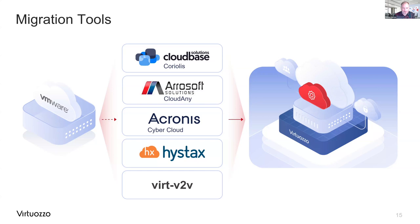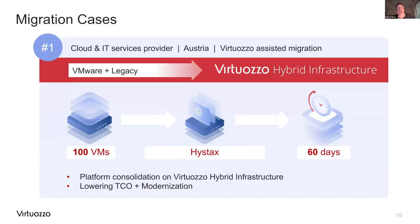Here are four customer cases. The first is a cloud and IT services provider from Austria that was looking for platform consolidation and found Virtuoso Hybrid Infrastructure as the go-to solution for VMware workloads and some legacy workloads. We did the regular Migration Blueprint and the tool of choice was HiStacks. We moved around 100 VMs in about 60 days end to end — and to answer the earlier question, those 60 days cover all three stages, not just the execution phase.